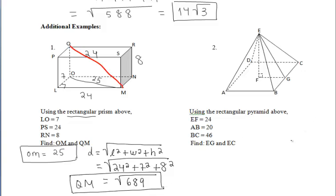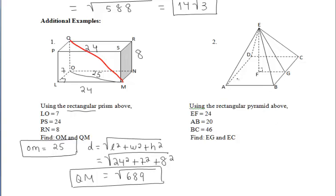Let's take a look at example two. We want to use now the rectangular pyramid above. So this isn't a square pyramid now like the first example. It's a rectangular one. So we know that EF, which is the altitude of our pyramid or the overall height of our pyramid, and that's 24, we know that AB is 20 and that BC is 46.